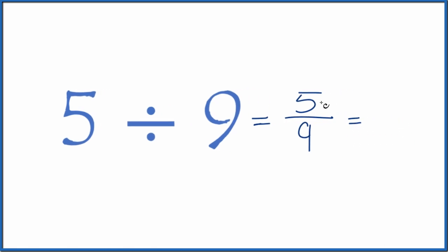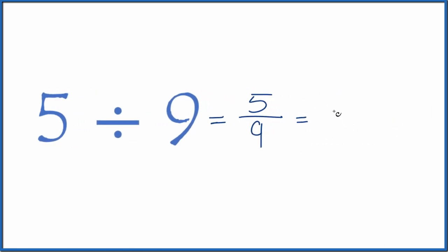You could also, on your calculator, divide 5 by 9, and you get 0.555. The 5's just keep repeating. So let's put a bar over that. As a decimal, 5 divided by 9 is 0.5 repeating, and the 5's keep going.